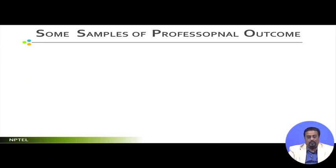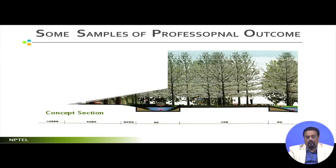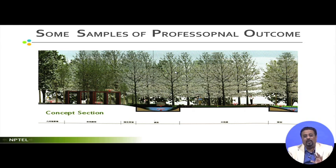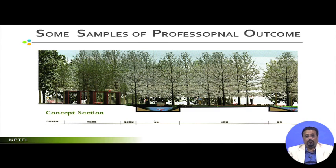Landscape architects are equally or more competent than a visualizer. This is a representation of a concept section — drawn like a technical drawing, with the section line showing pits, mounds, embankments, water bodies, and emulated images of trees. This gives clarity to the viewer — the owner, when seeing the section, gets a very clear understanding.